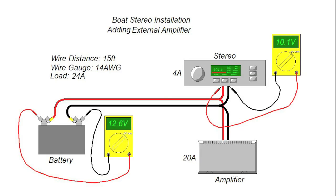However, now we're going to add an external amplifier into the boat stereo system. So the load now has gone from 4 amps to 24 amps. We still have the same 12.6 volts at the battery, but now we only have 10.1 volts at the stereo because of the voltage drop due to the excessive current. Now, it might be pointed out that a 14 gauge wire can handle at least 30 amps of current, but the voltage drop is just too excessive for the system to work correctly.